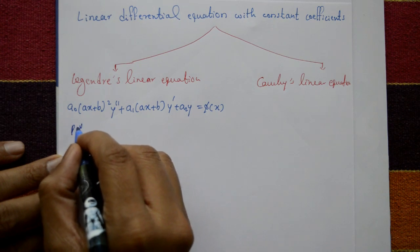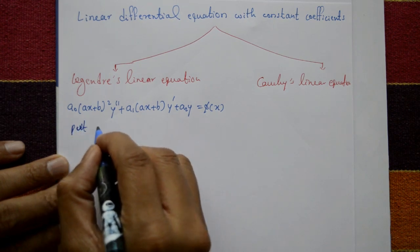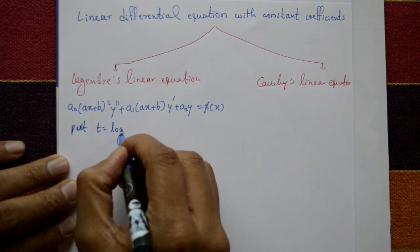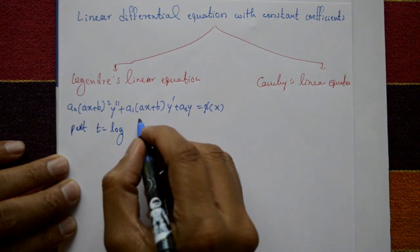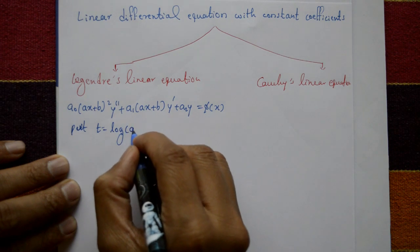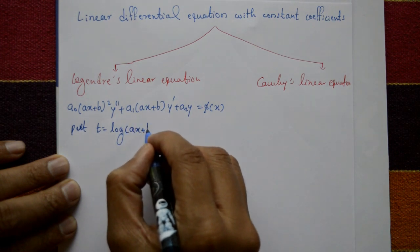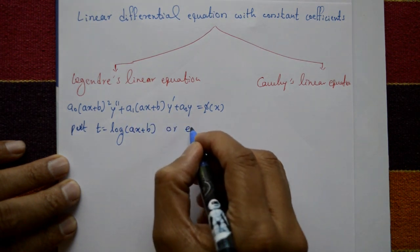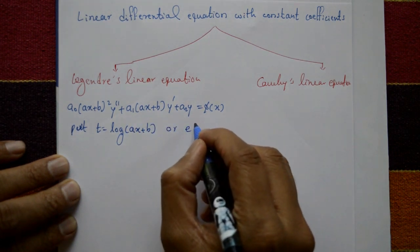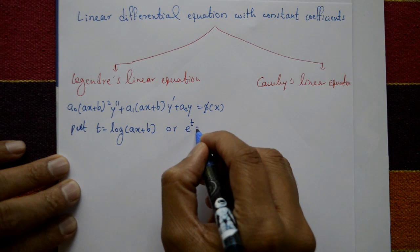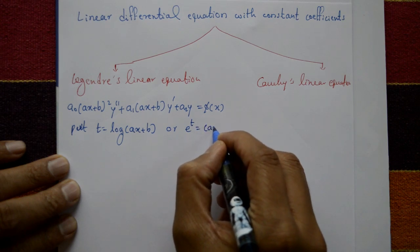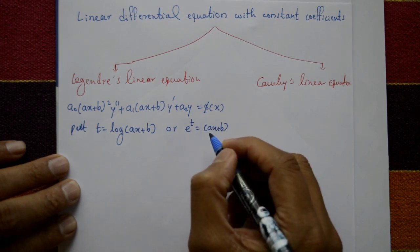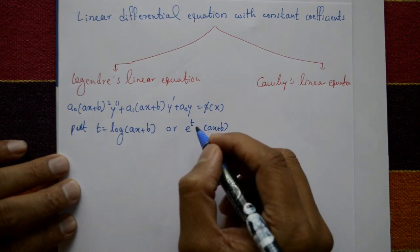Now you put t equal to log(ax + b), or equivalently e raised to t is equal to ax + b. This is the substitution for Legendre's equation.